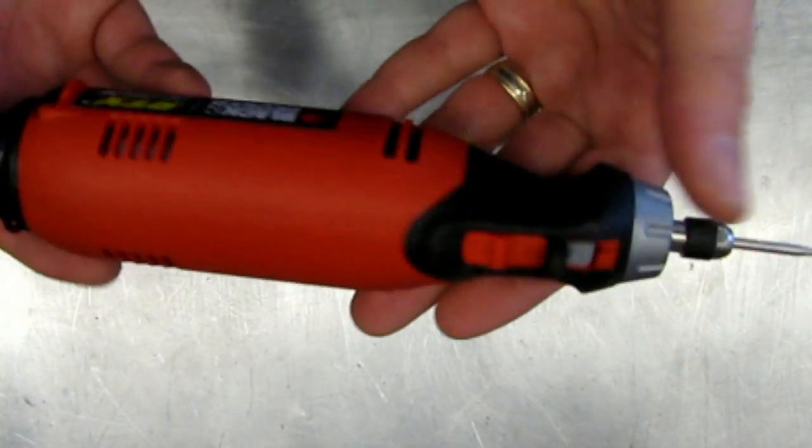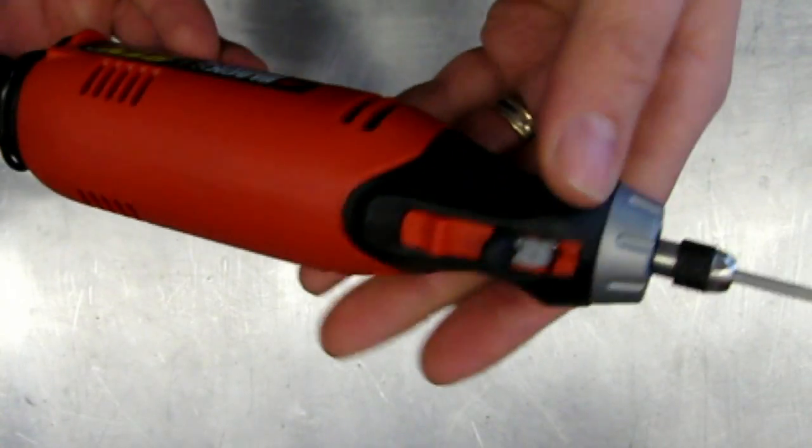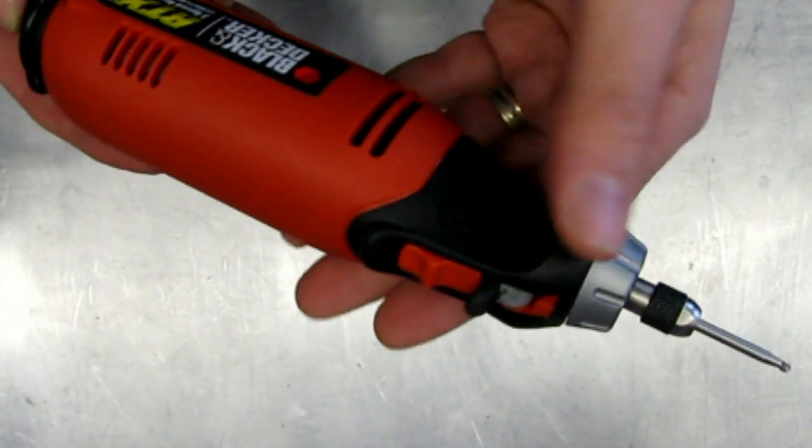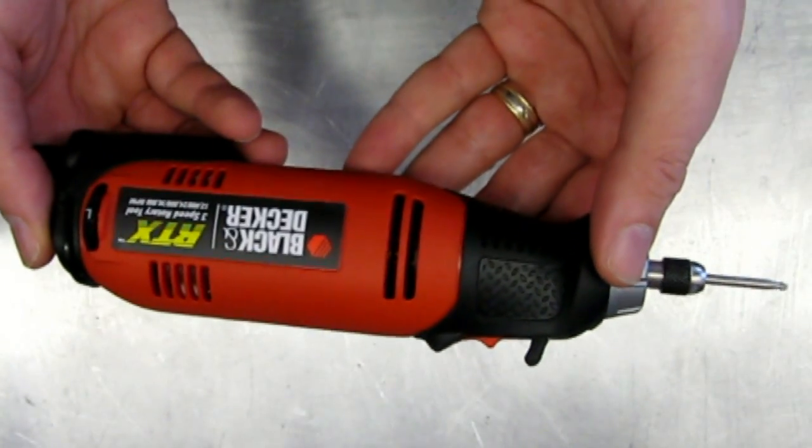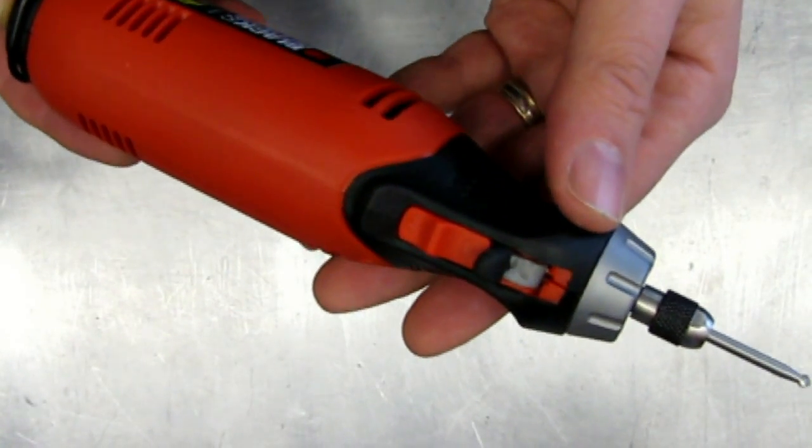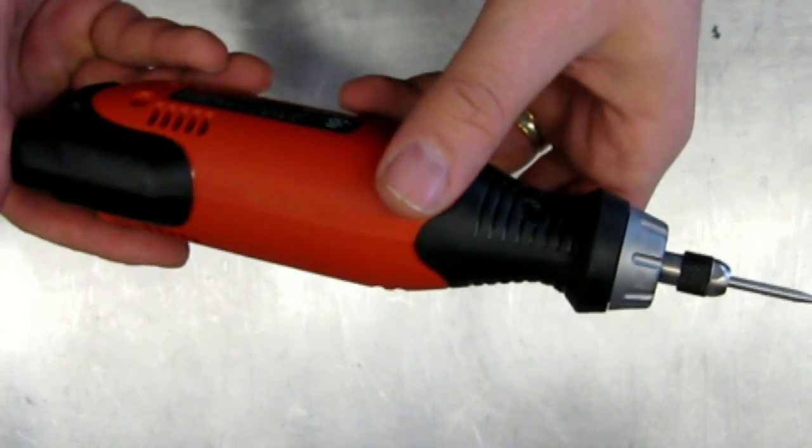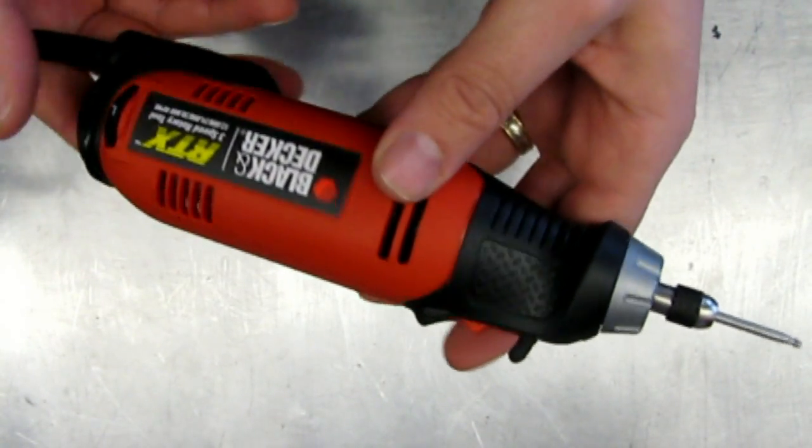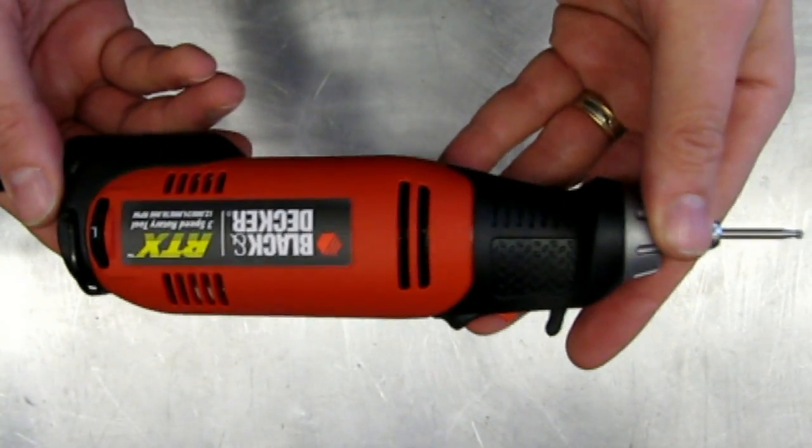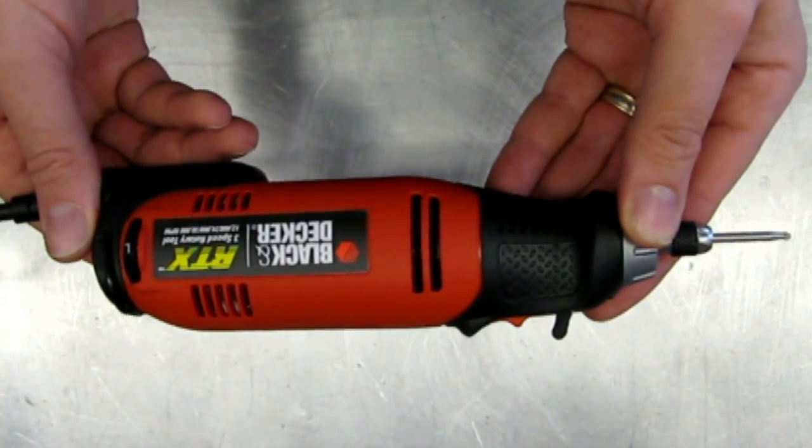But I wanted to mention that here on the Monster Mod channel, we've got some videos. One is Dremel techniques for case modding. And that's a two part series which applies to all rotary tools. And then another video for installing a custom window in your case. Where I use a rotary tool to make the initial cut before using the jigsaw to make the cut out in the panel. So check out those videos and keep the Black & Decker RTX in mind if you're looking for a good rotary tool.